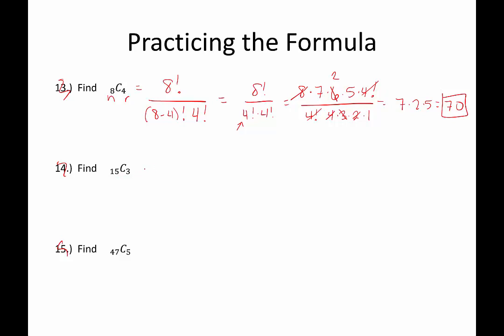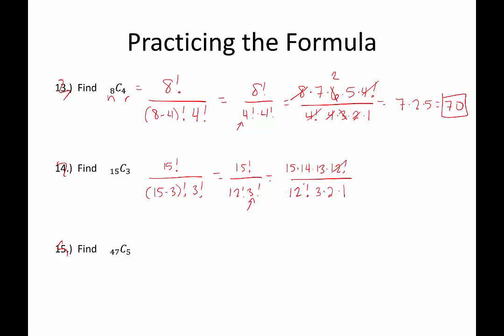We want to find 15 choose 3. Plugging into the formula: 15 factorial over (15 minus 3) factorial times 3 factorial, which is 15 factorial over 12 factorial times 3 factorial. I'll expand 15 factorial until I reach 12 factorial: 15 times 14 times 13 times 12 factorial, divided by 12 factorial times (3 times 2 times 1). Those cancel; then 3 goes into 15 five times, and 2 goes into 14 seven times, leaving 7 times 5 times 13, which gives us 455. So 15 choose 3 is 455.